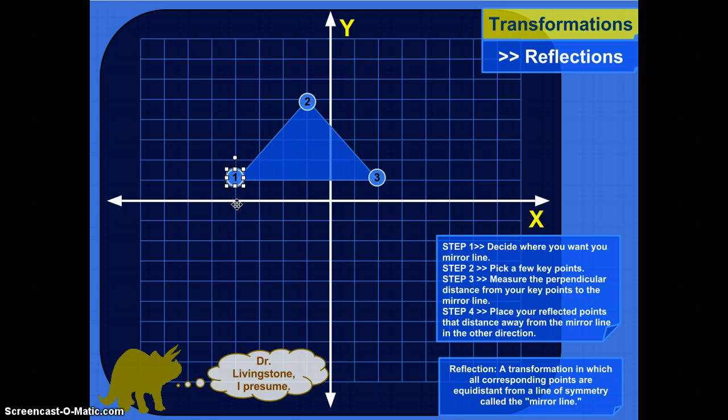From here to the line is one unit. So I'm going to move the corresponding point one unit from the mirror line. Here we go. Starting at the mirror line and then one down.